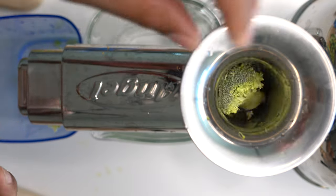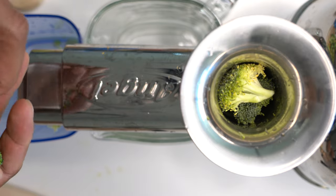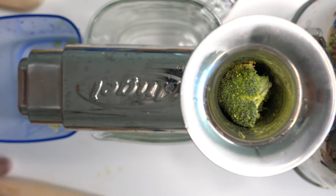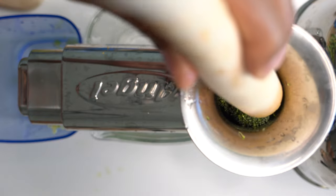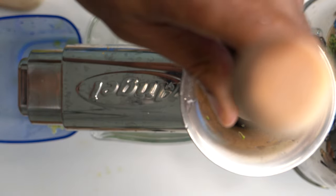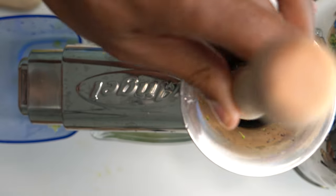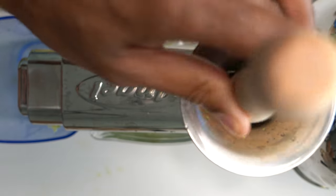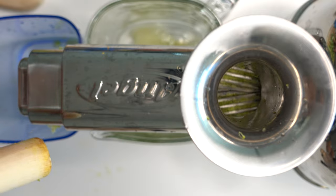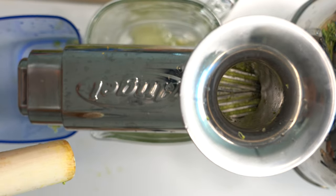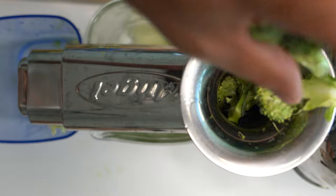I'm just going to go ahead and place the broccoli inside of the angel juicer and it's not going down right away so I'm going to assist it a little bit by using the plunger. Just press it down and then I'm just going to go ahead and add more broccoli to the mix.